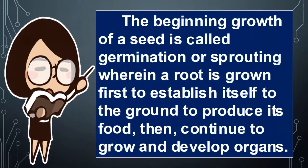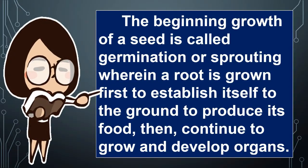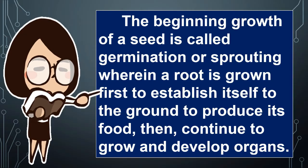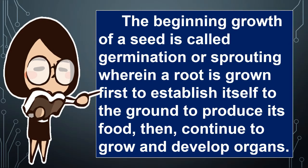The beginning growth of a seed is called germination or sprouting, wherein a root is grown first to establish itself to the ground to produce its food. Then it continues to grow and develop organs.